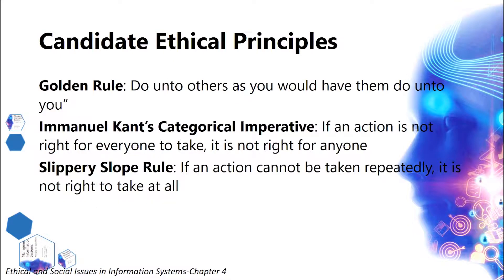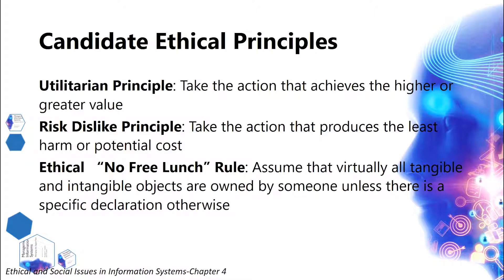Candidate ethical principles include: the Golden Rule — do unto others as you would have them do unto you; Immanuel Kant's categorical imperative — if an action is not right for everyone to take, it is not right for anyone; the slippery slope rule — if an action cannot be taken repeatedly, it is not right to take at all; the utilitarian principle — take the action that achieves the higher or greater value; the risk dislike principle — take the action that produces the least harm or potential cost; and the ethical no-free-lunch rule — assume that virtually all tangible and intangible objects are owned by someone unless there is a specific declaration otherwise.